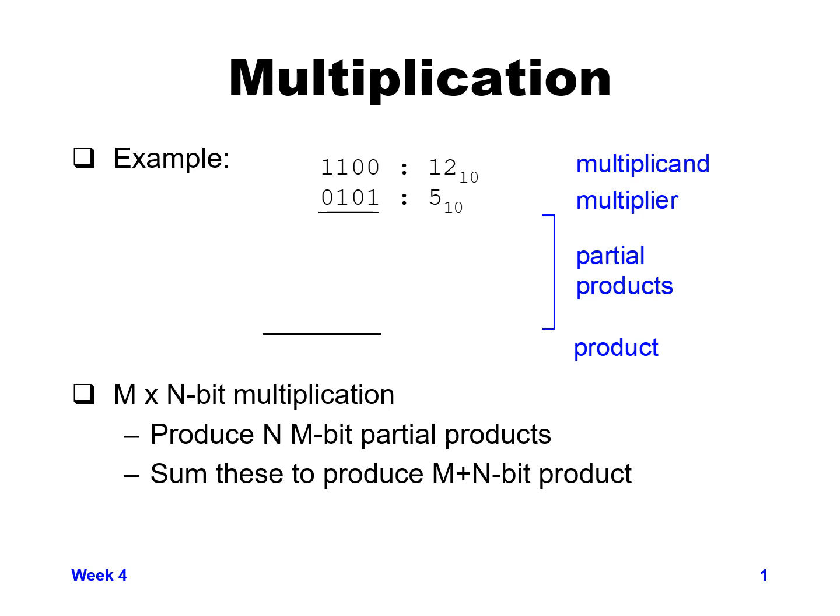Doing multiplication like we learned in grade school, we take the lowest-order digit of our multiplier and multiply it by the multiplicand. Since our digits are either one or zero, if the multiplier digit is a one, we take the multiplicand as-is and copy it down to the first row.